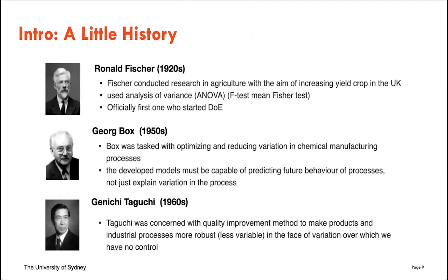Out of this need, particularly in the early 20th century, due to strong revolutions in agriculture and industrial processes, people started thinking about more sophisticated ways to design experiments. Ronald Fisher, familiar from ANOVA tests, was trying to optimize research output in agriculture, for instance increasing crop yields in the UK. George Box was another important figure involved in the 1950s in optimizing variation in chemical manufacturing processes. Genichi Taguchi in the 1960s is famous for developing many methods for industrial process optimization.